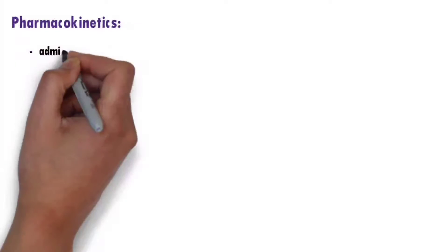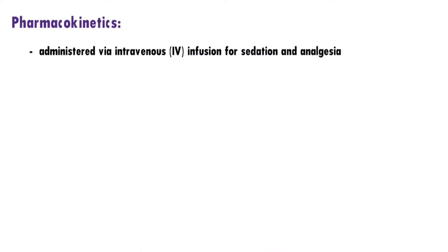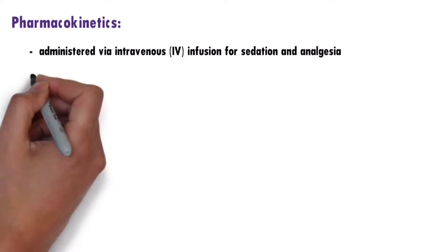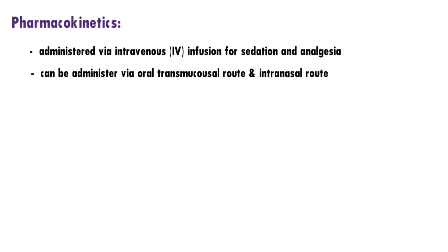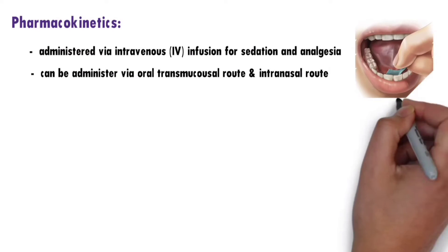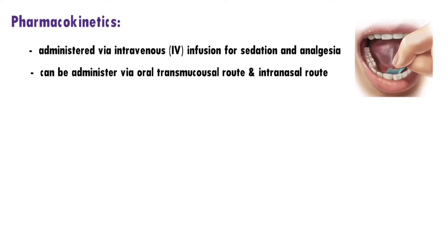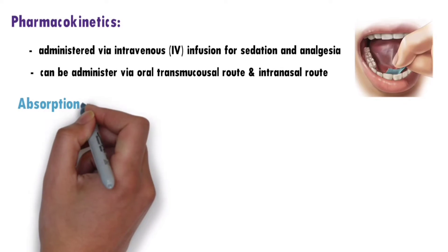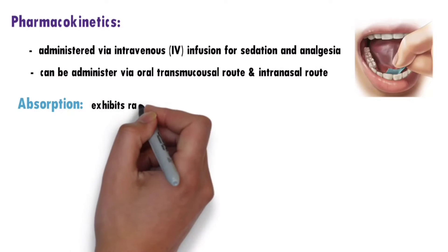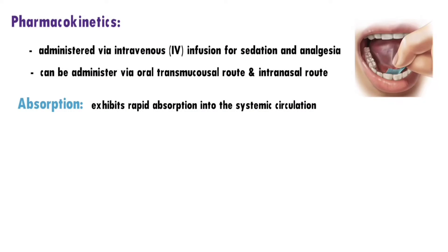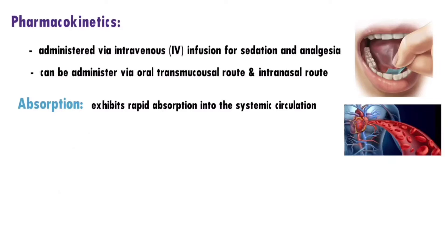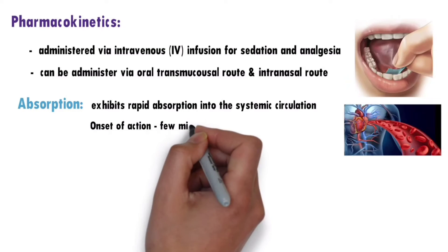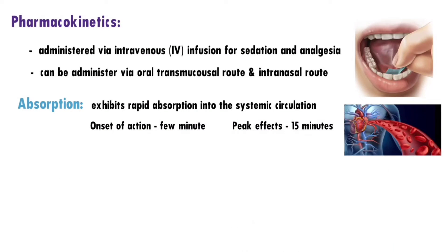Pharmacokinetics. Dexmedetomidine is primarily administered via intravenous infusion for sedation and analgesia. However, it can also be administered via oral transmucosal route — meaning the drug is placed under the tongue or against the cheek — and via intranasal routes. When administered intravenously, it exhibits rapid absorption into the systemic circulation. The onset of action is generally within a few minutes, and it achieves its peak effects within 15 minutes.